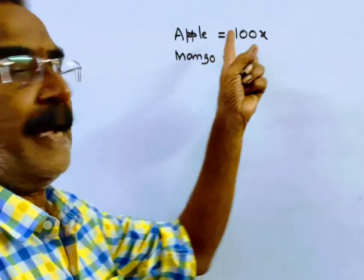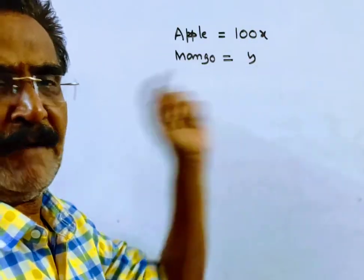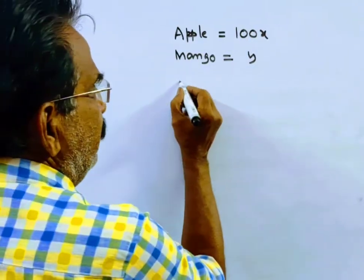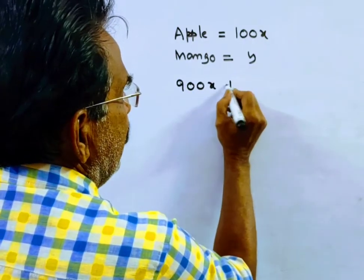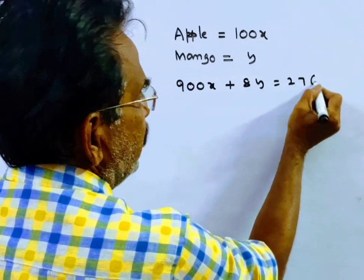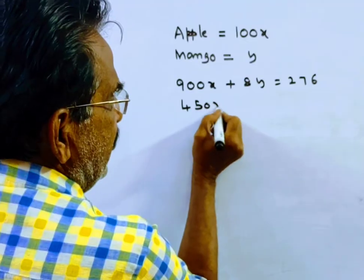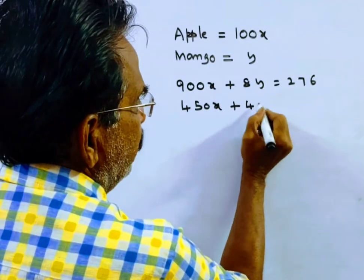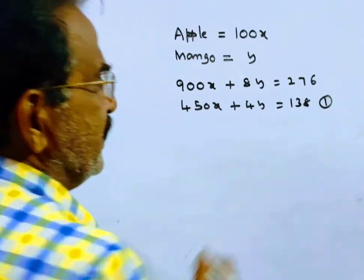Let each apple be 100x and each mango be y. The price of 9 apples and 8 mangoes equals Rs. 276. Dividing by 2, we get 450x plus 4y equals 138. This is equation 1.